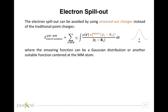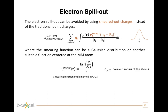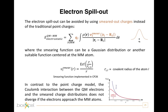The smearing function used in CP2K is a Gaussian distribution or another suitable function centered on the MM atom. For those very interested in the theoretical details, this is the exact potential energy function generated by a Gaussian charge distribution. In contrast to the point-charge model, with the smearing function the Coulomb interaction between the electrons and the smeared charge distribution does not diverge if the electrons approach the MM atoms, as shown in the plot sketched here.